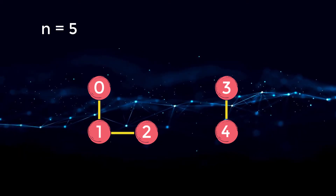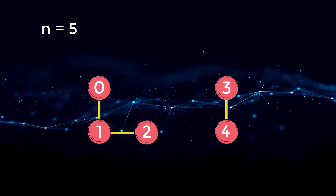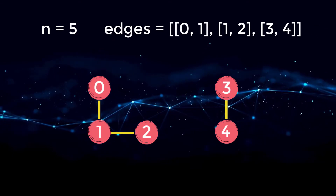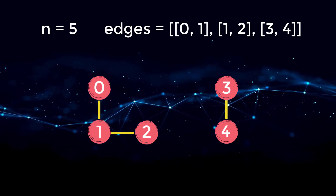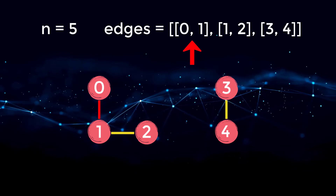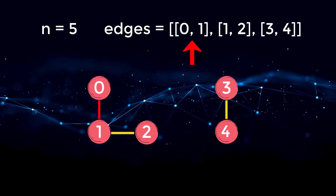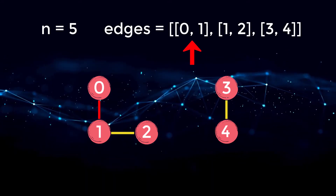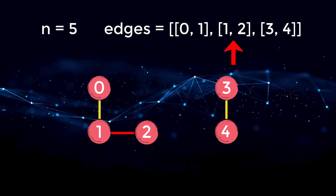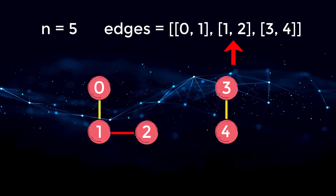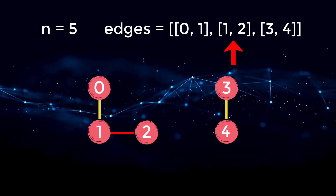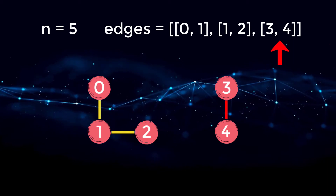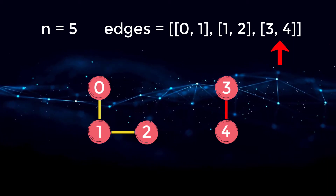This graph is visually equivalent to the following edges. We have an array containing zero and one, meaning node zero is connected to node one and vice versa. Edge one-two means one is connected to two and two connected to one. And finally, three and four means three is connected to four and four is connected to three.